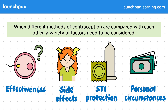Another important thing to consider would be personal circumstances. The cost of contraceptives could be a factor, although thankfully in the UK most contraceptives are free. Other circumstances could include religious beliefs or other personal factors, for example how easy it is for someone to remember to take a pill every day. Because of all of these factors, the choice of contraception is a question that cannot be answered by science alone.